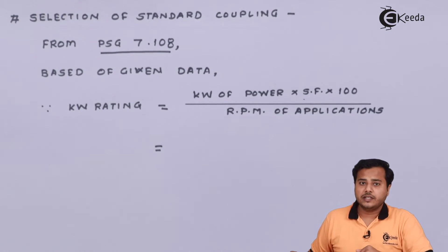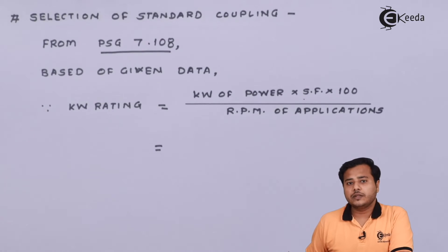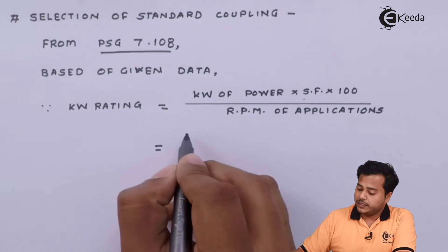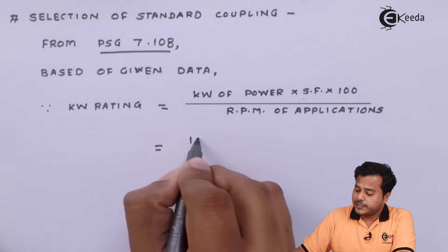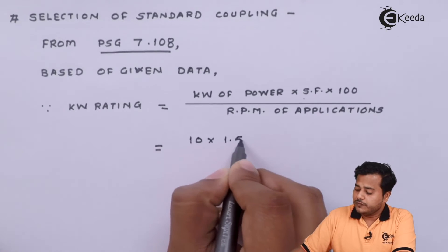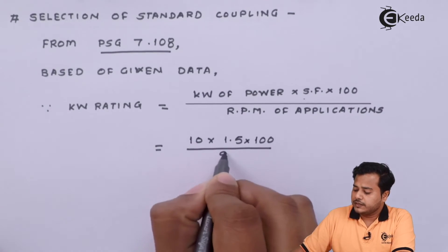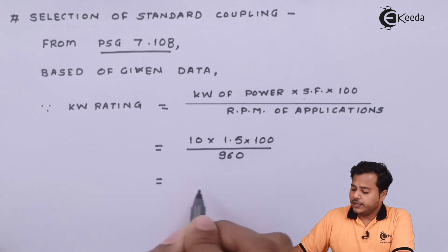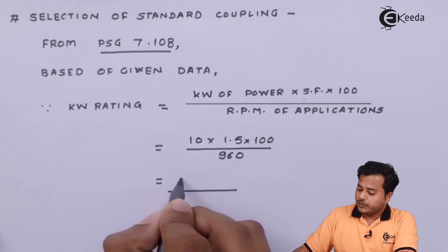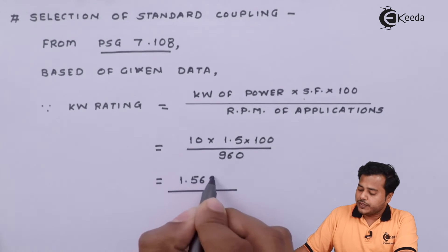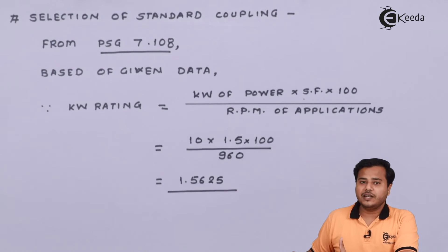The applications we have is only one which is the centrifugal pump. Let us take the service factor to be 50 percent. So that makes it 1.5 and therefore kilowatt becomes 10 into 1.5 into 100 divided by 960. The rating value comes out to be somewhere around 1.5625. So based on this rating we are going to select the actual coupling dimensions or the parameters.